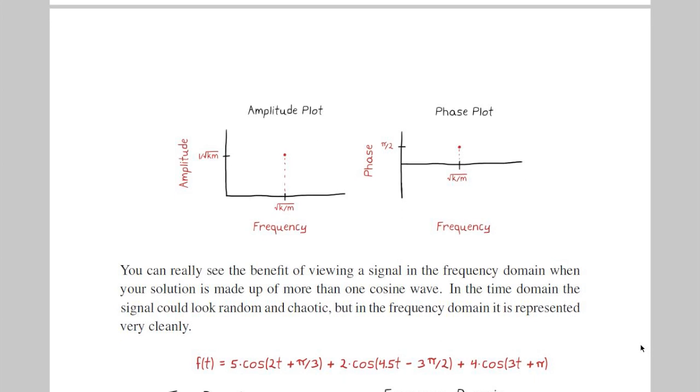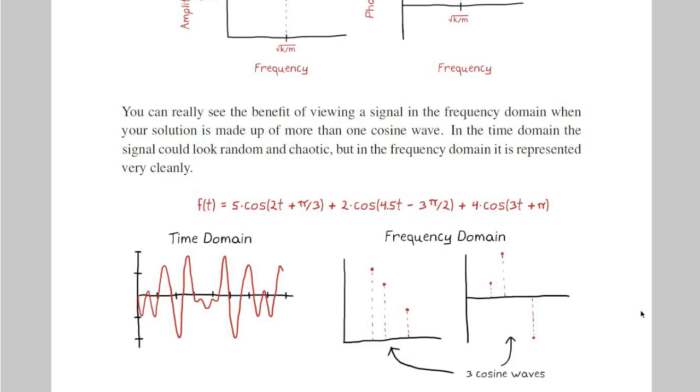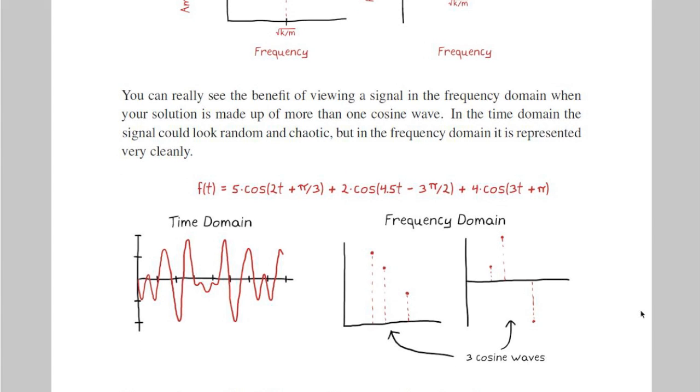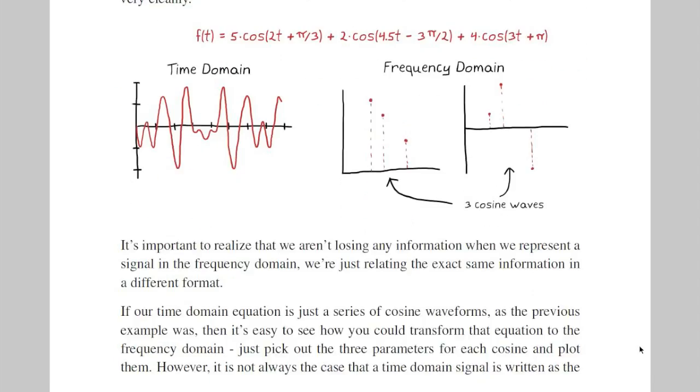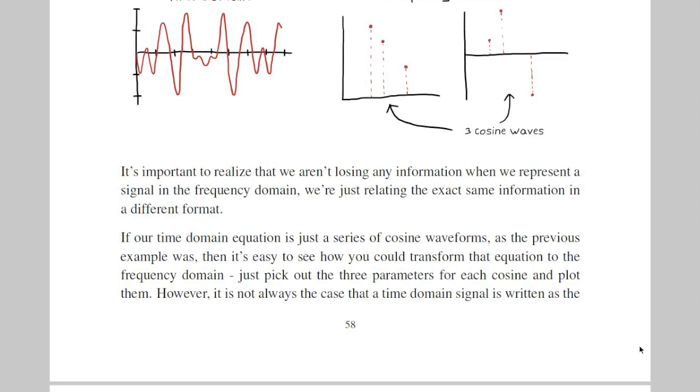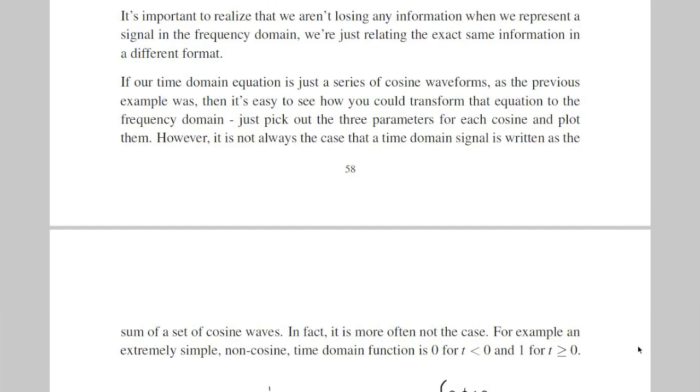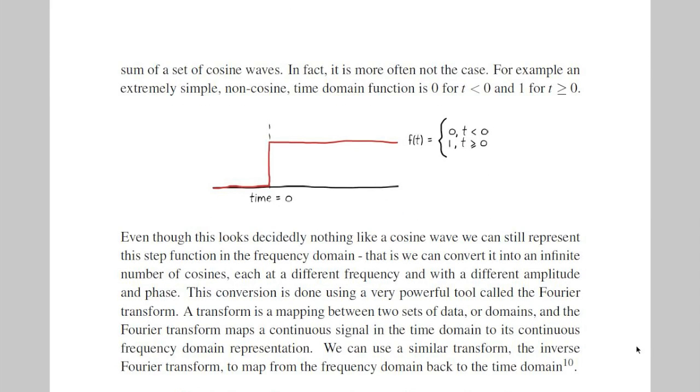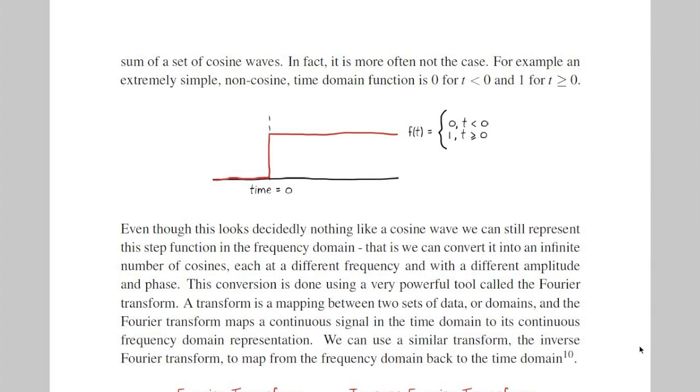From a purely plotting standpoint, you can see how a signal that is made up of three cosine waves looks rather chaotic in the time domain, but is quite neat in the frequency domain. But you may have guessed correctly that this simplification in plotting doesn't hold up for all signals, specifically for signals that look nothing like cosine waves. For example, take this step function in the time domain. We can still represent it in the frequency domain by converting it into an infinite number of cosine waves, each at a different frequency and with a different amplitude. We do that conversion using the Fourier transform.